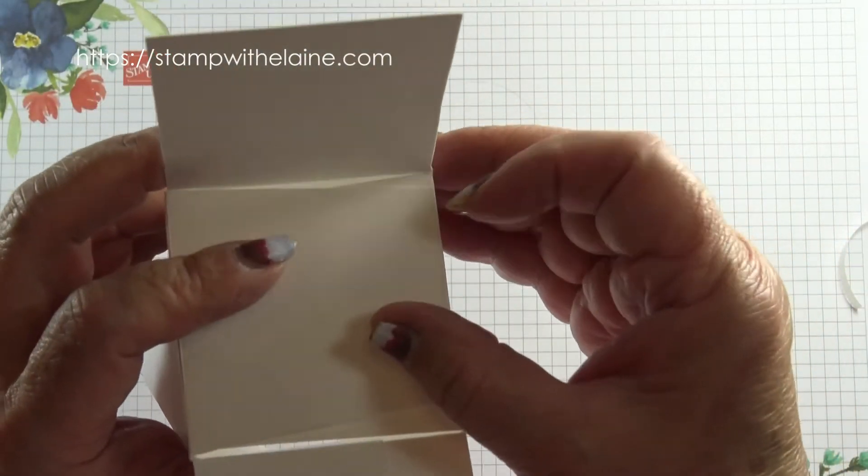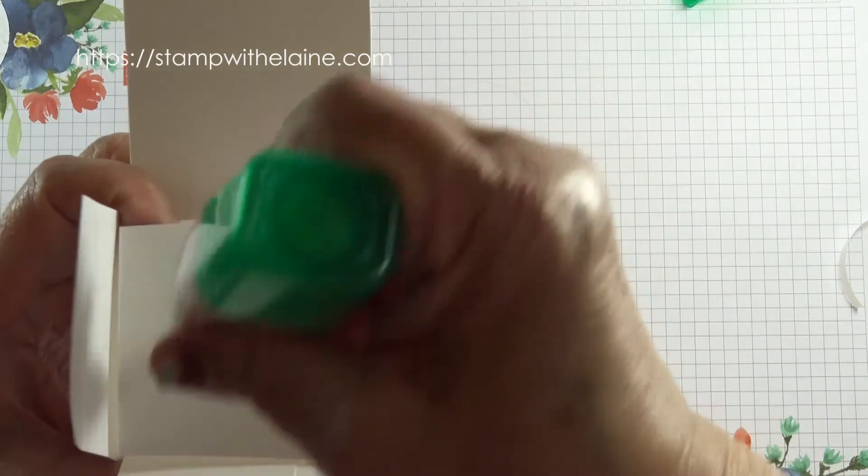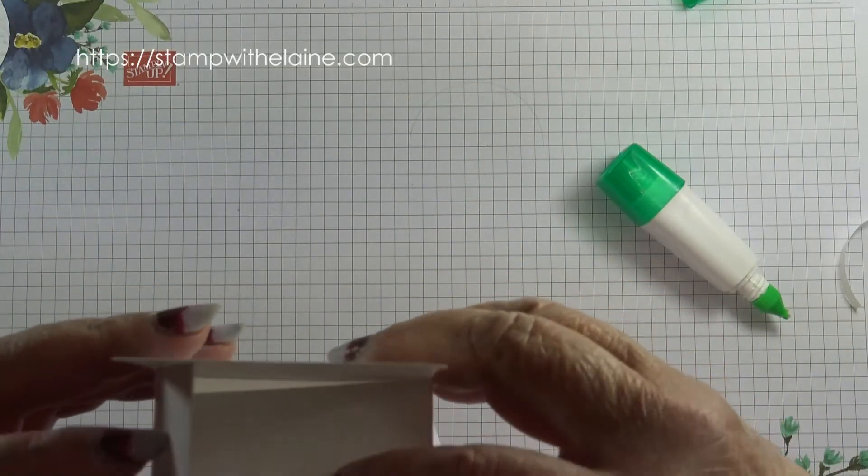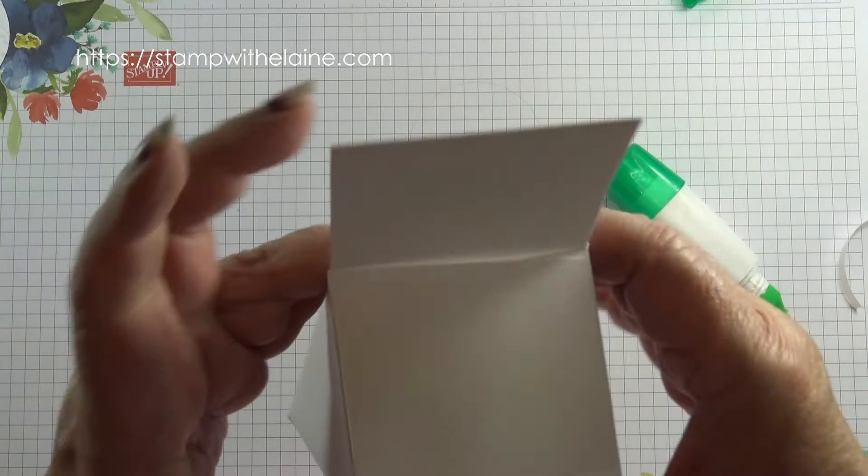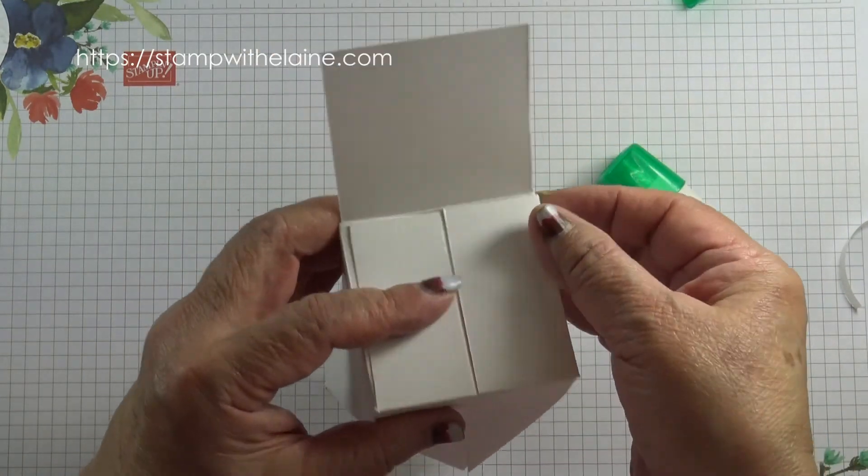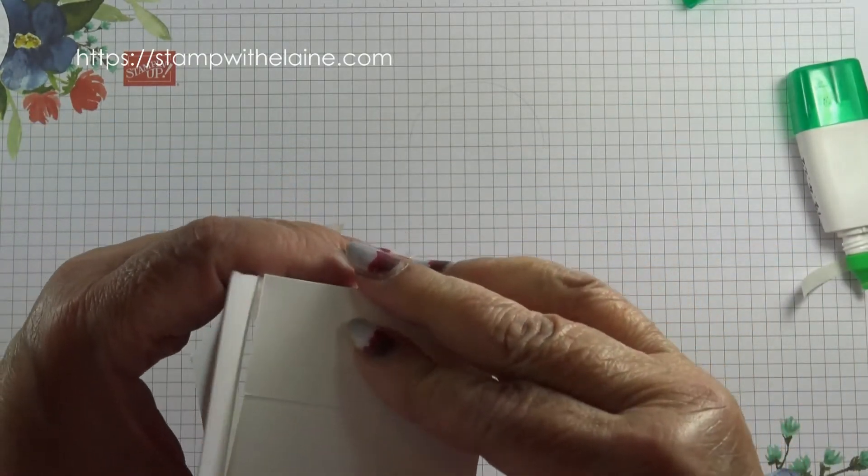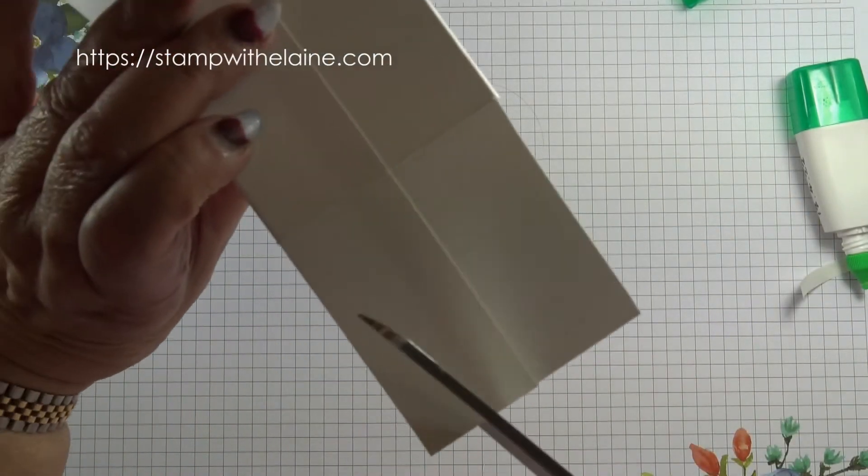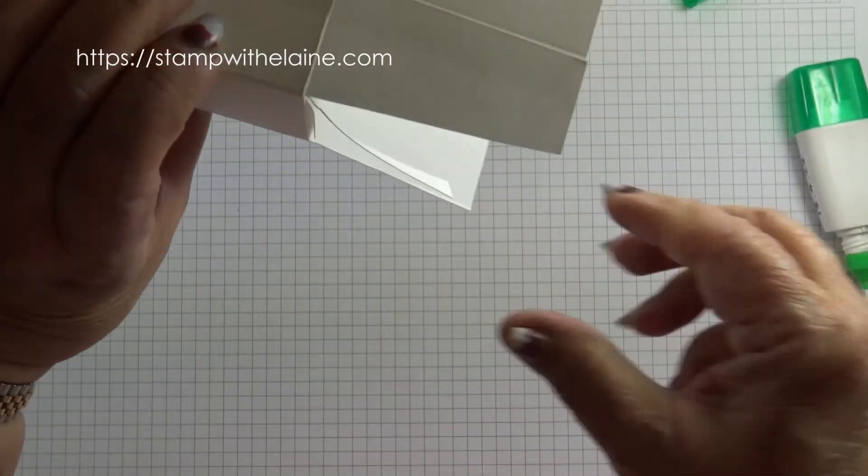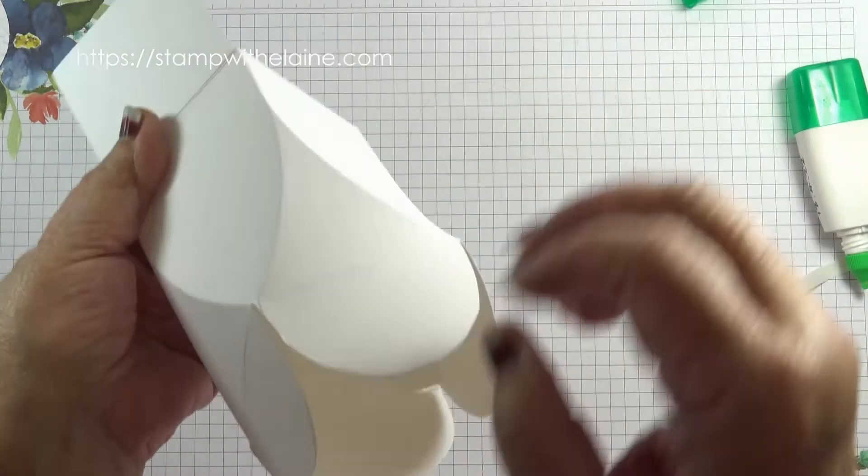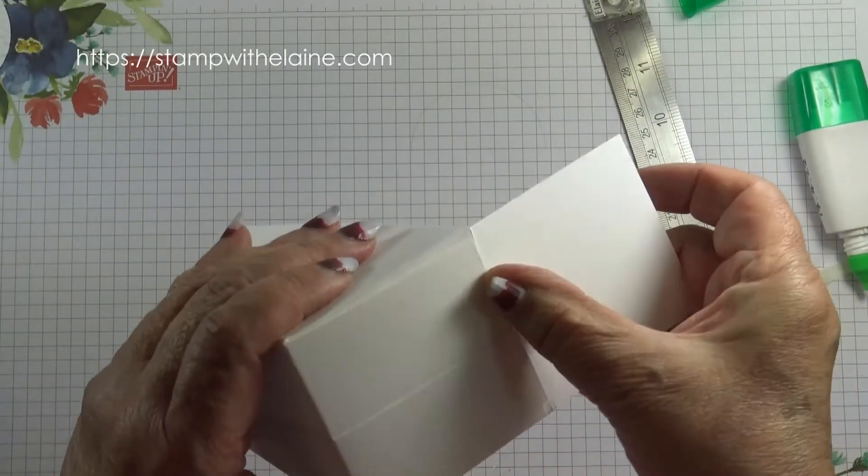Put the two side panels in first, just a bit of glue. Make sure it's square, you don't want it to go out of shape. Then the bit where the join is goes in next. I'm going to trim this off a bit at an angle so it doesn't show. Pop that on, make sure that's down properly. And then the last panel, which is the front of the box.